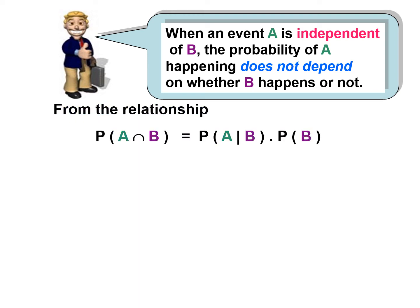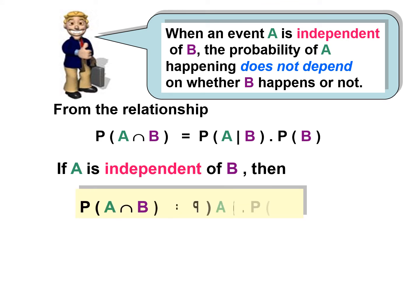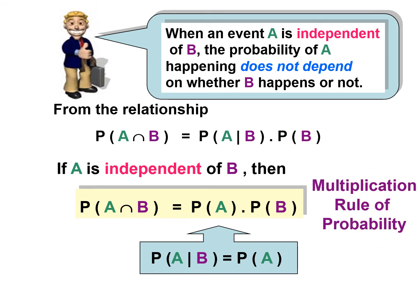From the relationship, the probability of A intersect B equals P(A|B) times P(B). Since we already know that P(A|B) is P(A), this gives us what we call the multiplication rule of probability: P(A∩B) = P(A) × P(B).